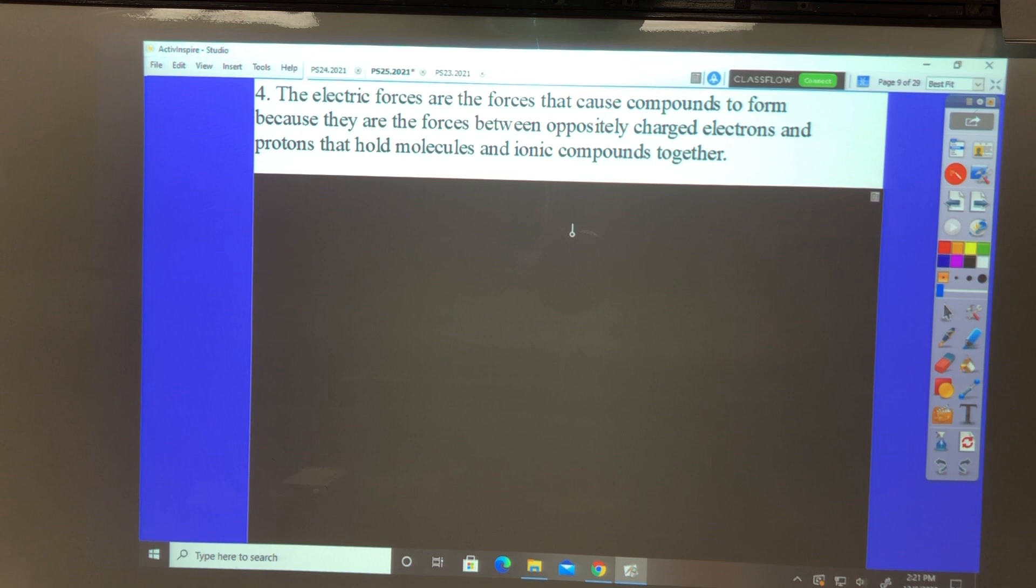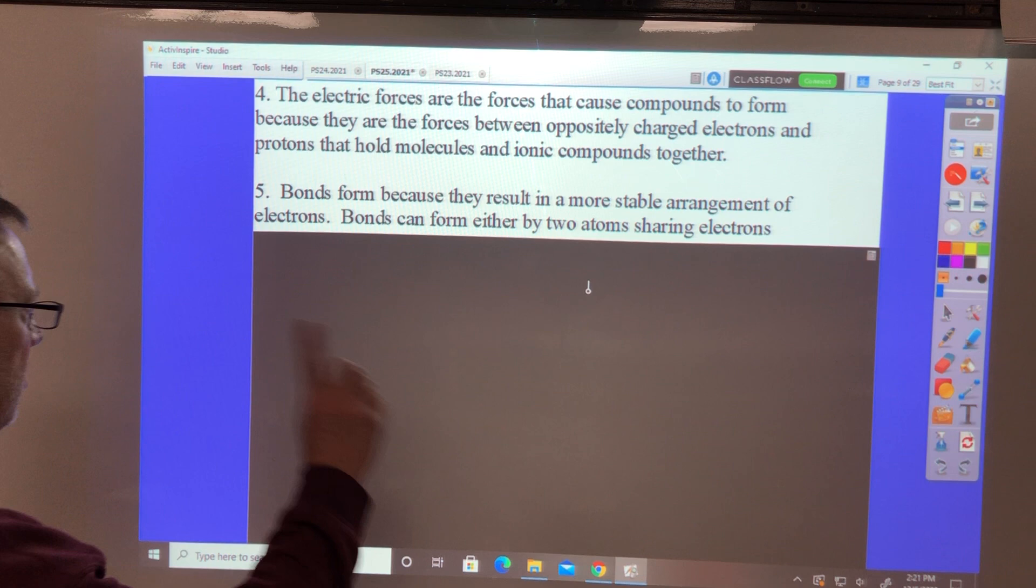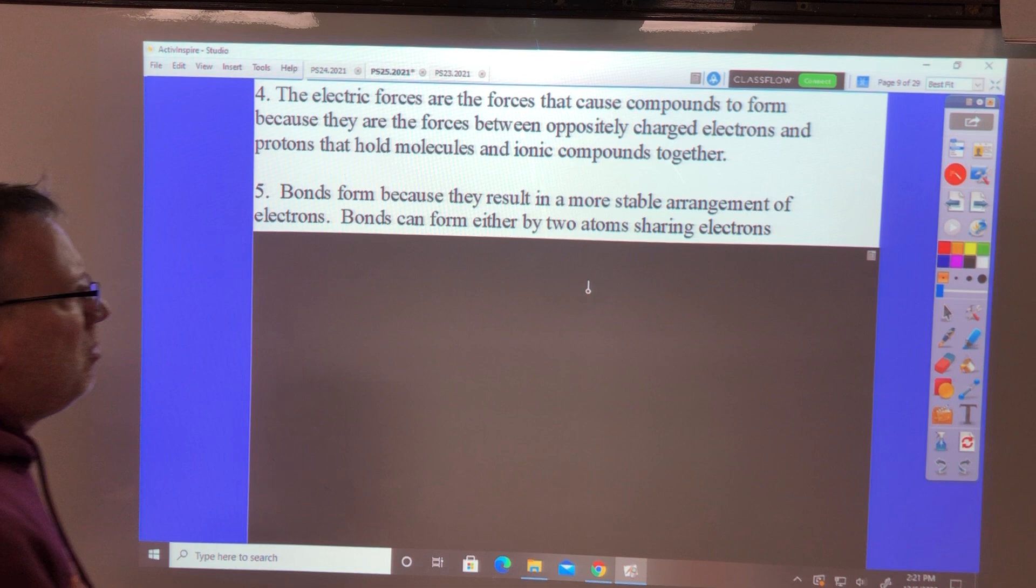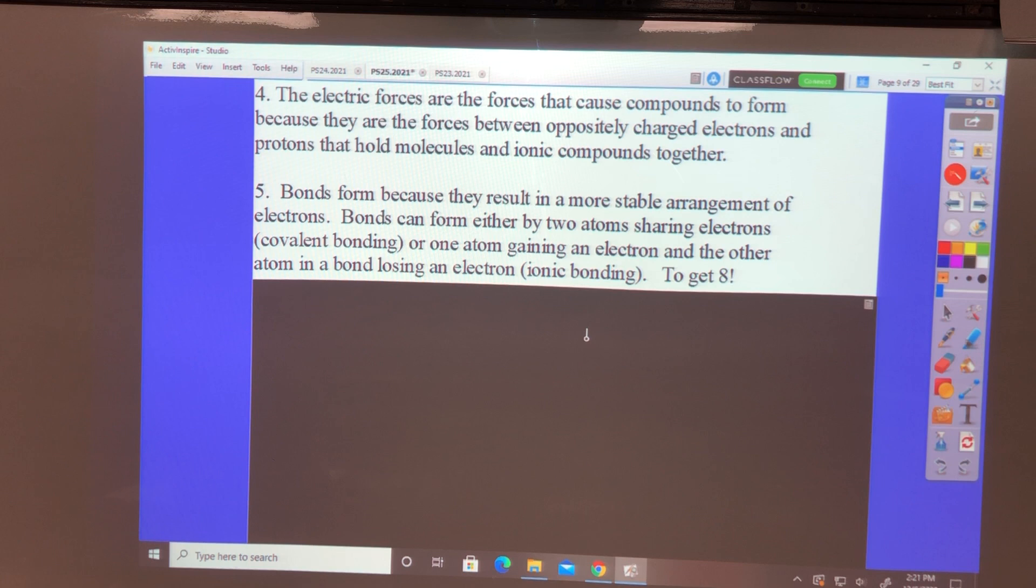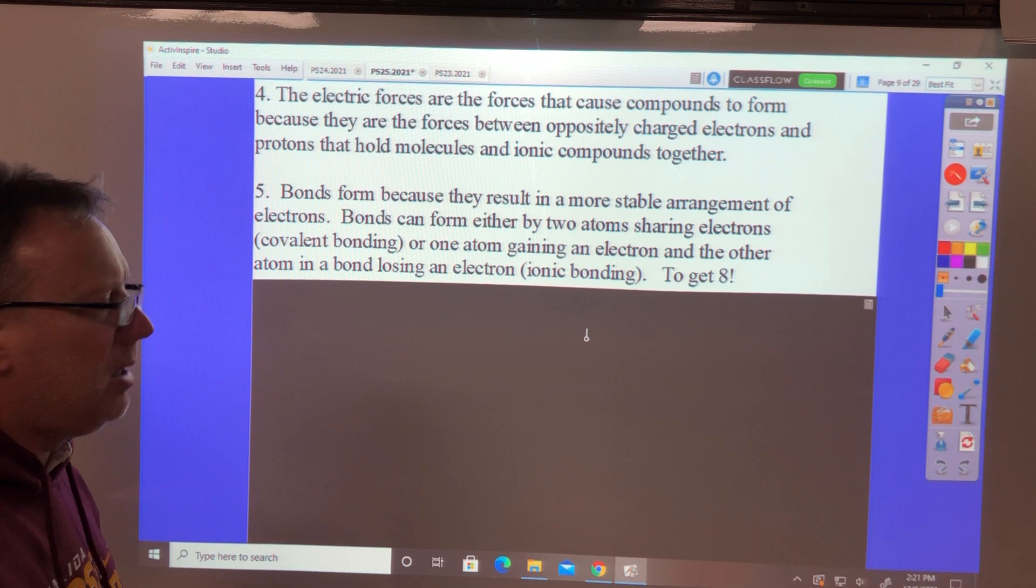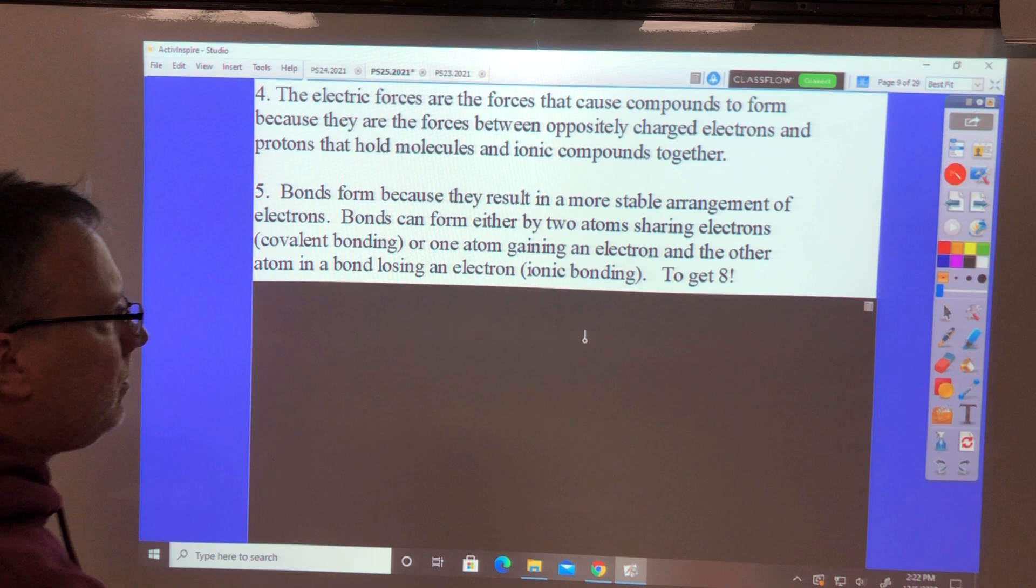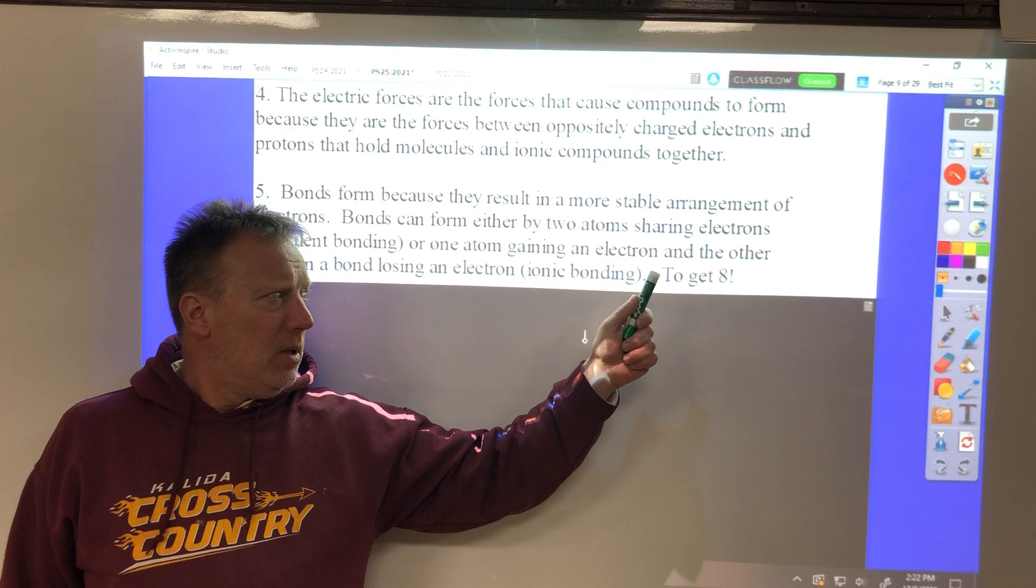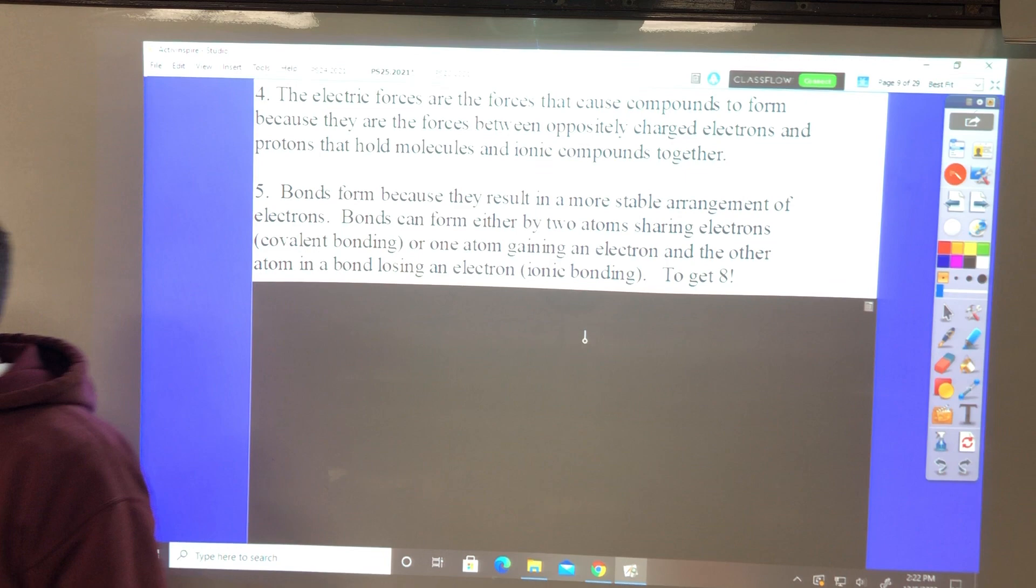Number five: Describe why chemical bonding occurs. Basically because they're all trying to get eight valence electrons. Give two examples of how bonds can form. Bonds form because they result in a more stable arrangement of electrons—eight. Bonds can form either by two atoms sharing electrons, that's a covalent bond, or one atom gaining an electron and the other atom in a bond losing an electron. That's called ionic bonding to get eight. Not listed here, and we're really probably not going to talk about it much more this chapter, is metallic bonding.